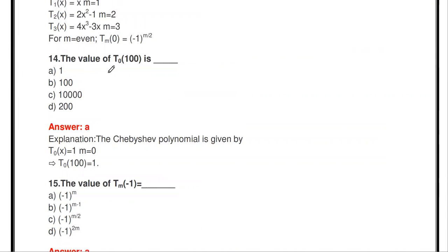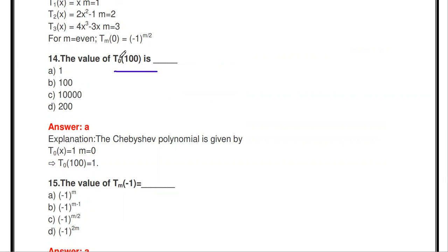What is the value of T₀(100)? When m = 0, T₀(x) equals 1 for any value of x. So T₀(100) = 1.